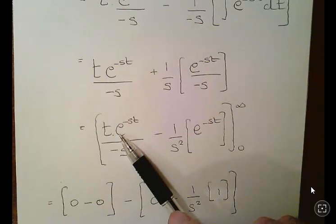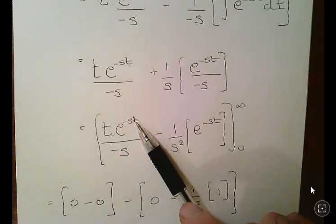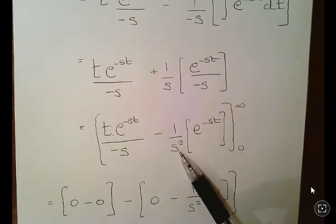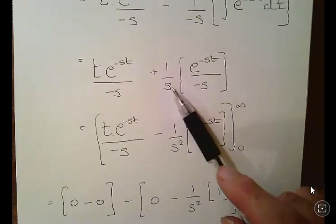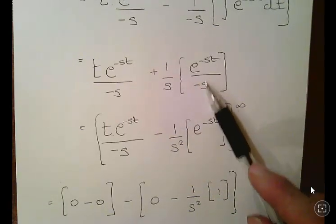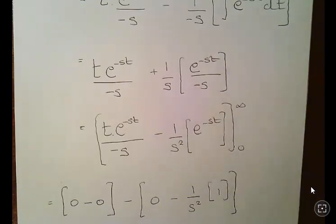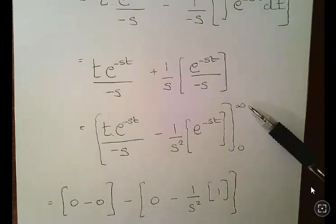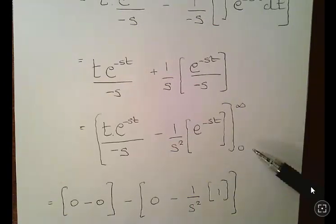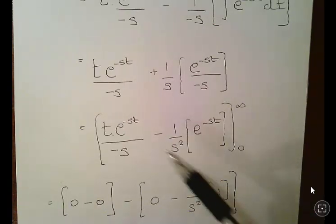Okay. So when we simplify this as much as we can. We get t e to the minus st over minus s. Minus 1 over s squared. Which is plus 1 over s times. This part here where I filtered this out here. e to the minus st. Okay. Now again we're using our rules here of e to the minus infinity is 1. Sorry, e to the minus infinity is 0. And e to the 0 is 1.